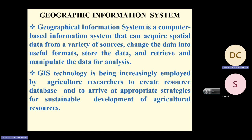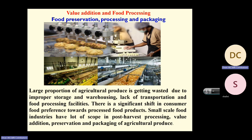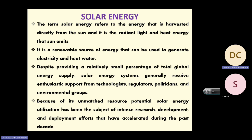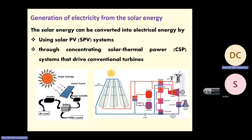Small-scale food industries have scope, especially for food technology students, in post-harvest processing, value addition, preservation, and packaging of agricultural produce. Regarding bioenergy, solar energy can be converted into electrical energy using solar PV cells through concentrating solar thermal power systems that drive conventional turbines.